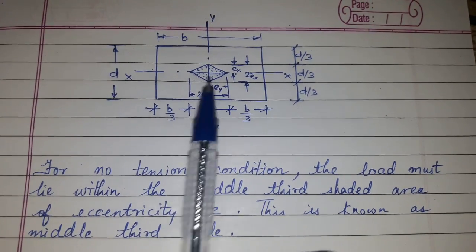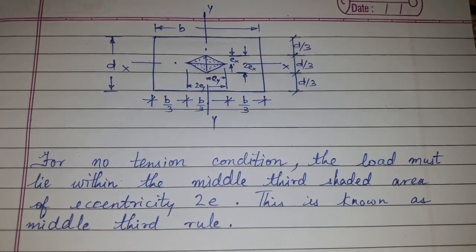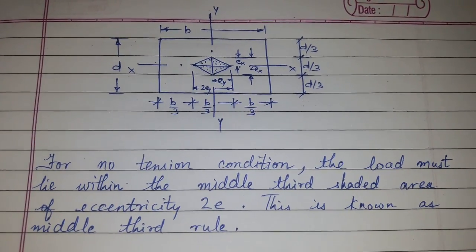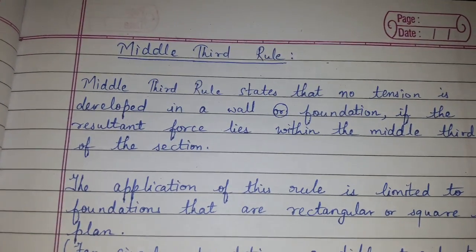Similarly, this is also applicable for a square cross section. So this was middle third rule.